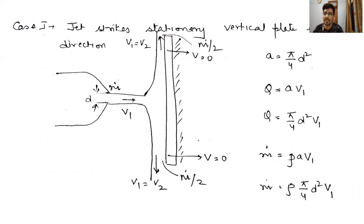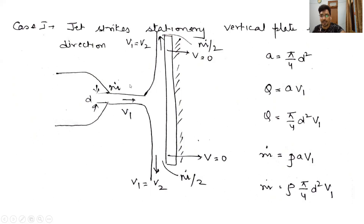Case one: jet striking a stationary vertical plate normal to the direction of the jet. The nozzle has diameter D, M_dot is the mass flow rate, and V1 is the velocity of the fluid coming out. The plate is stationary, meaning there is no motion in the plate when the jet strikes it. The mass flow rate exits equally from both sides: M_dot/2 and M_dot/2, each with exit velocity V2.